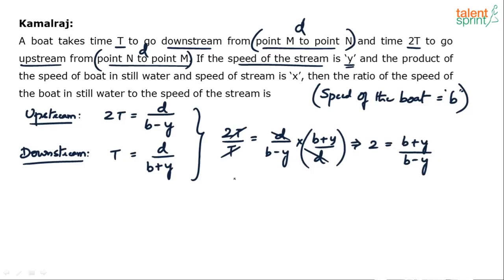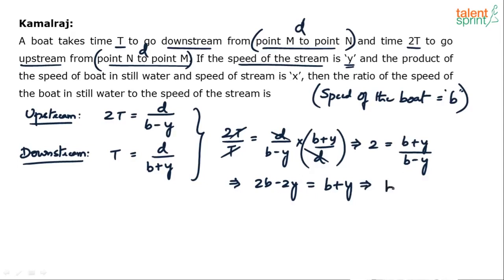Now simplify: cross-multiplying gives 2(b − y) = b + y, so 2b − 2y = b + y. Rearranging, 2b − b = y + 2y, which gives b = 3y.